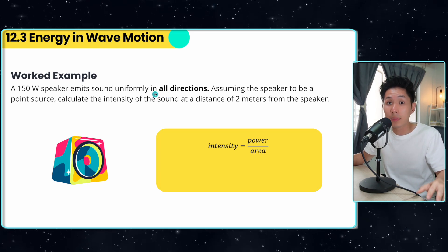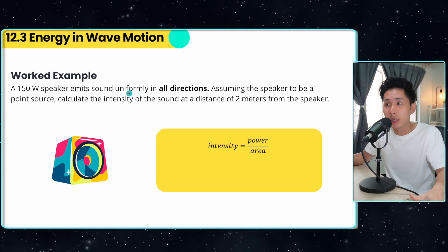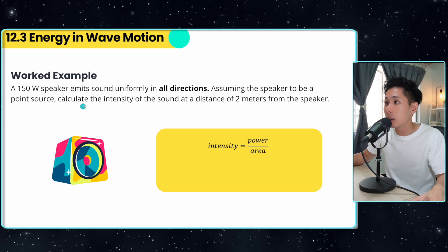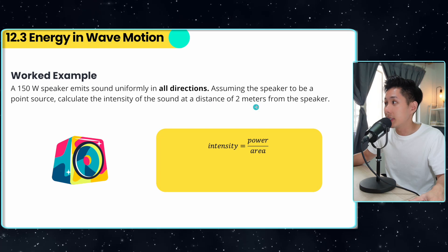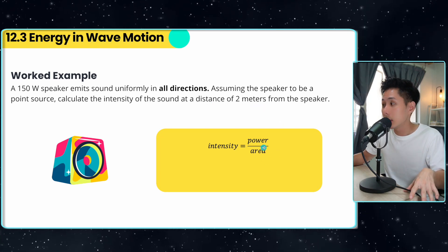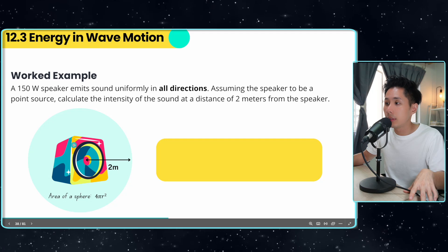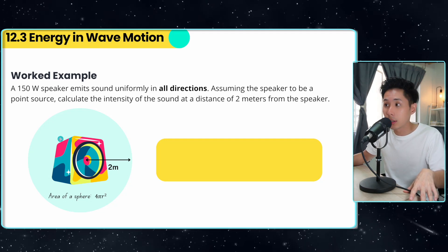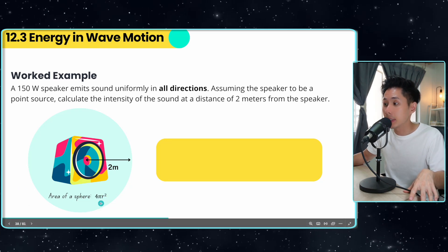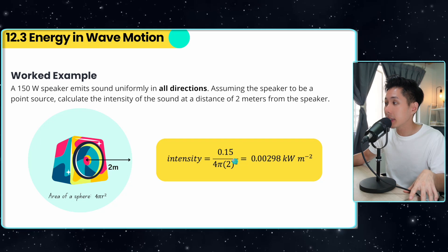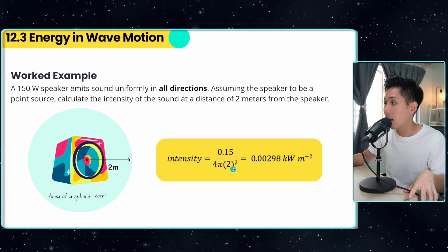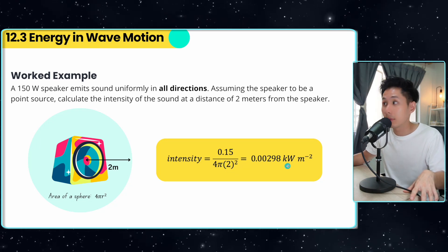Now let's look at another worked example involving intensity that is slightly more complicated. A 150-watt speaker emits sound uniformly in all directions. Assuming the speaker is a point source, calculate the intensity of the sound at a distance of 2 metres. It might be tempting to put 2 metres directly as the area, but we need the area, not the distance. The wave spreads out as a sphere, so the 2 metres is the radius. Using the surface area formula for a sphere — 4πr² — we substitute everything: 0.15 kilowatts divided by 4π(2)², giving the intensity of the sound wave.